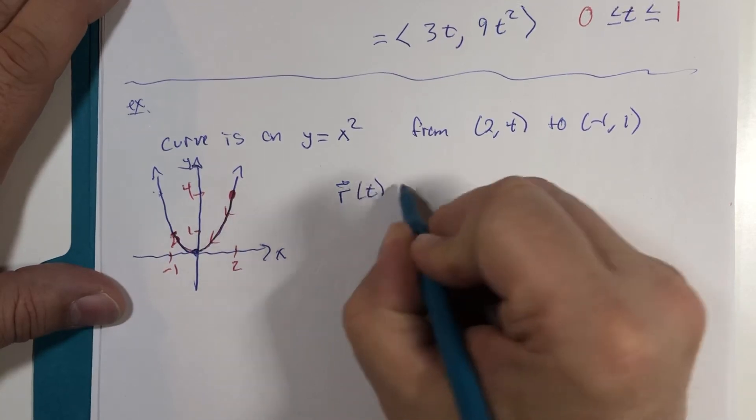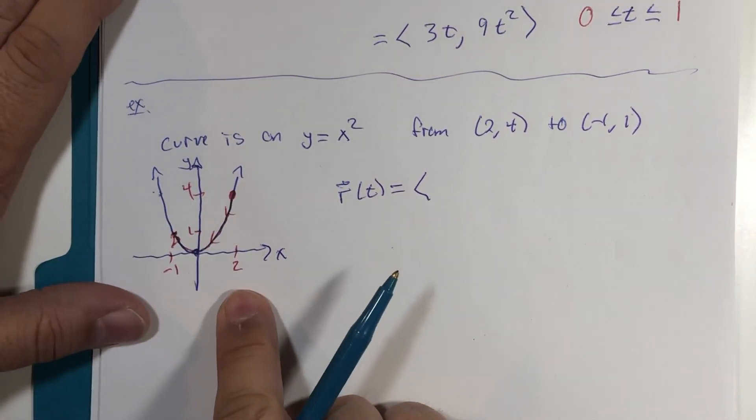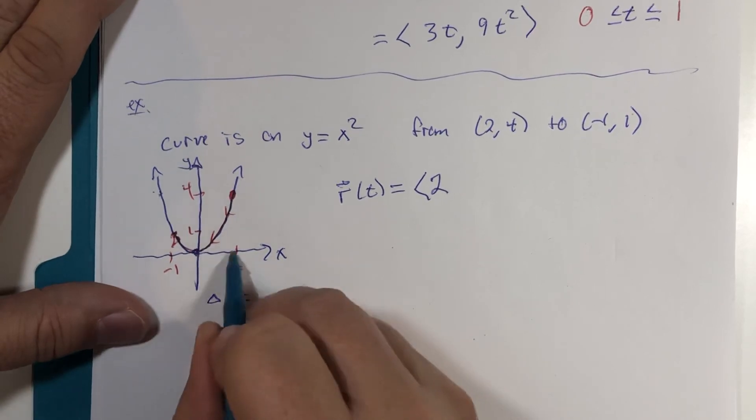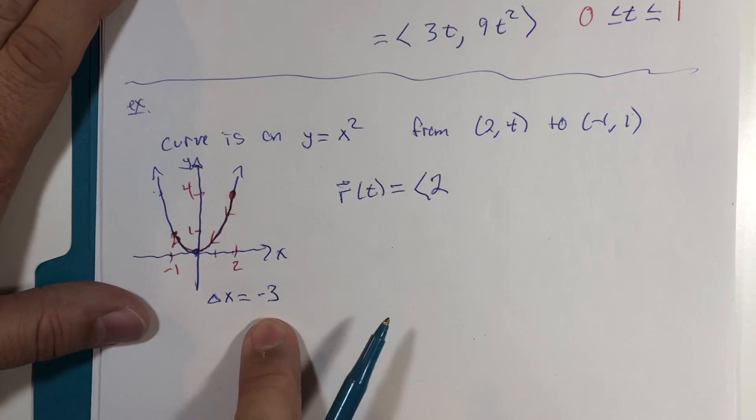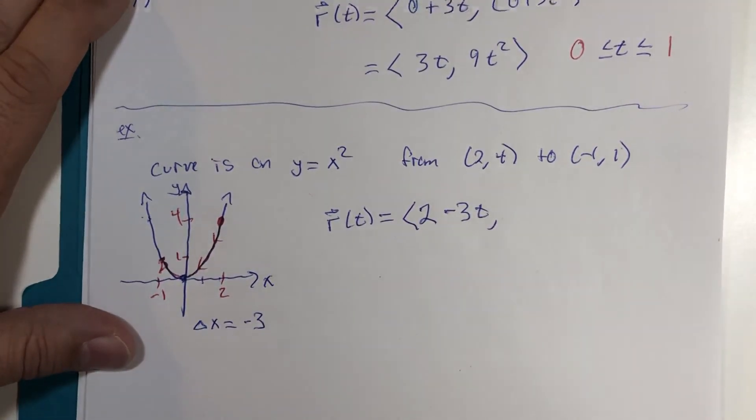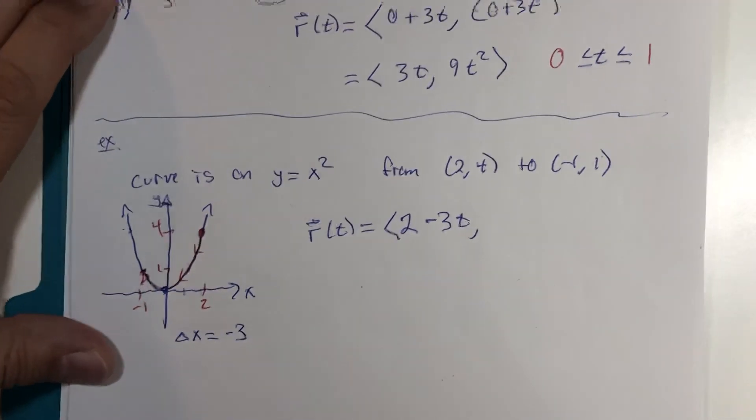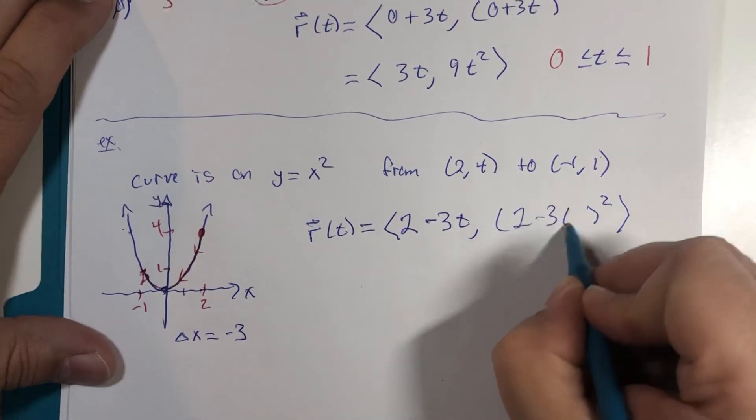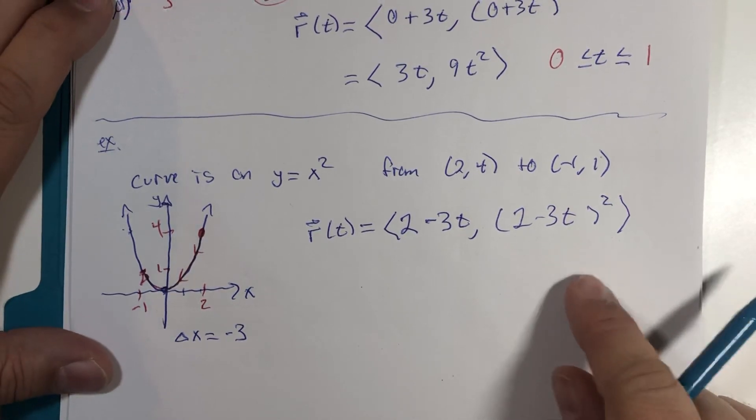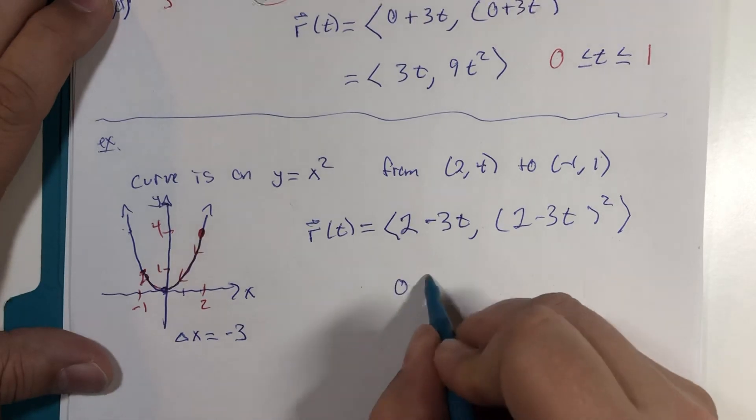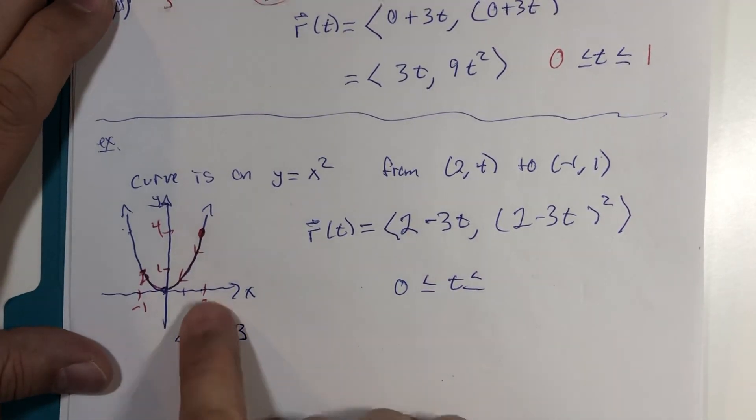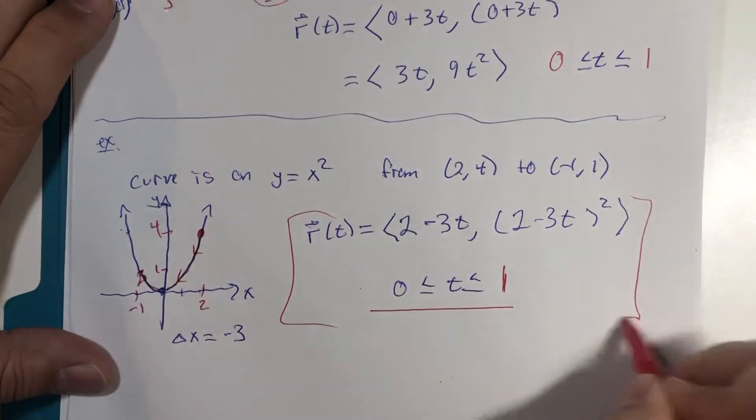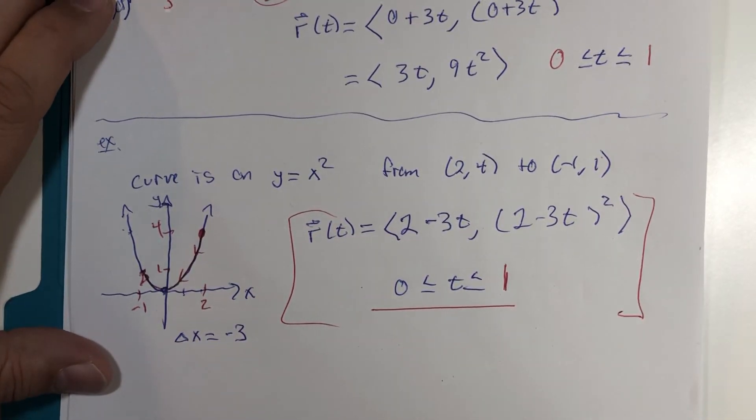Here we go. r(t) will be equal to the x component begins at 2. But then notice that delta x is 1, 2, 3 units to the left. Almost as if we were writing the parametric form of the line. But then the y component is whatever the x component is squared. We're going to leave it like this. I think it looks nicer this way. And we've set it up so that x starts at 2 and goes left 3 units in one step of time. All right, come back for some more. I've got a few more examples left to show you.